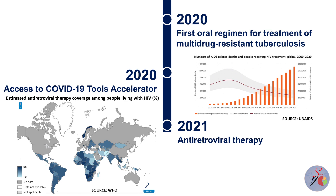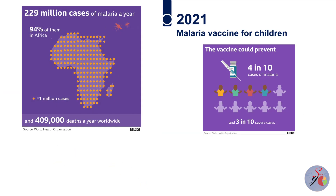At the end of December 2021, 28.7 million people were accessing antiretroviral therapy, up from 7.8 million in 2010, meaning that 75% of all people living with HIV were accessing treatment. WHO recommended a groundbreaking malaria vaccine for children living in areas of moderate to high malaria transmission in 2021 — the first vaccine against a parasite — which could save tens of thousands of young lives each year and led to a 30% reduction in severe malaria.